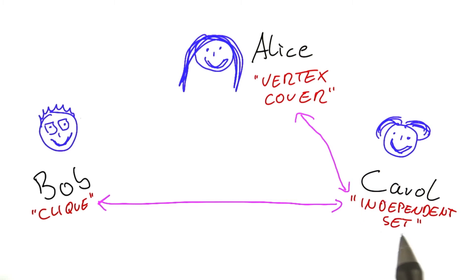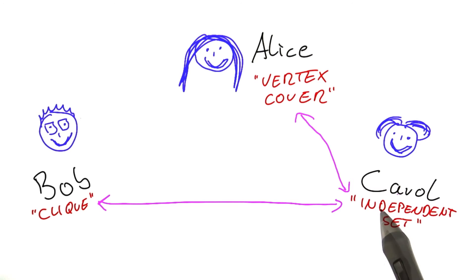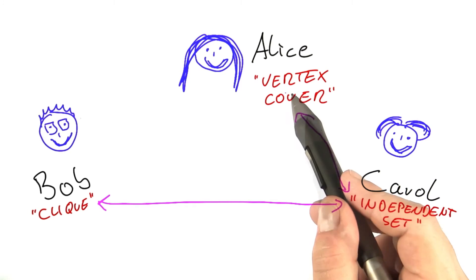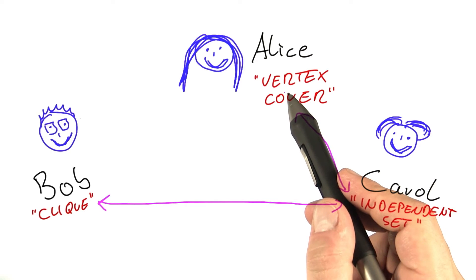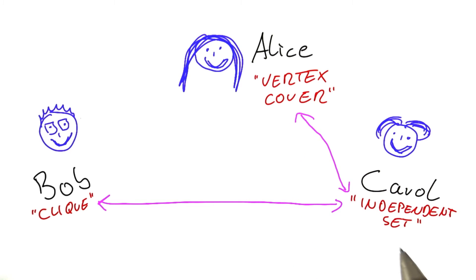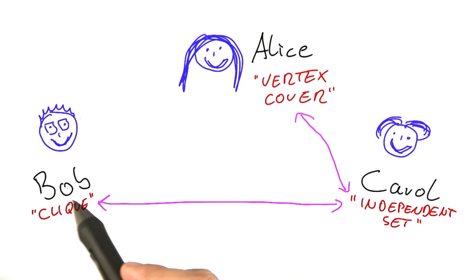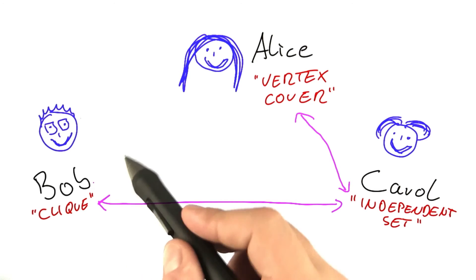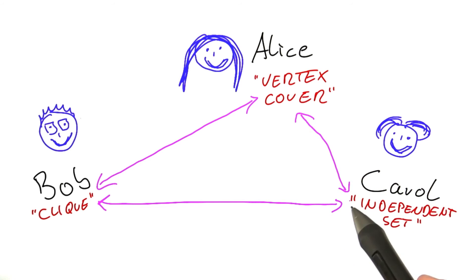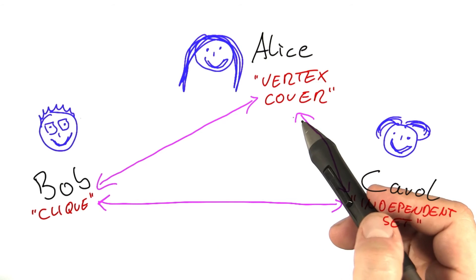And now we have also connected vertex cover to independent set, because we basically figured out that finding the largest possible independent set for a graph is almost the same as looking for the smallest possible vertex cover. This also means that if you can find the smallest possible vertex cover, then you have found the largest possible independent set, which we already know through transforming the graph lets you find the largest possible clique.